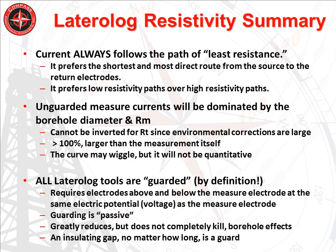To counter the borehole effect on the measure current, tool designers added guard electrodes on each side of the center electrode. Only the current from the center — the measure electrode — is measured. Guard electrodes are operated at the same voltage as the measure electrode so that the measure electrode current cannot flow up and down the borehole. The guard current flows up and down the borehole and into the formation, but the measure current is strongly focused radially into the formation. This active guarding greatly reduces borehole effects. An insulating gap by itself does not prevent the measure current from flowing up and down the borehole and is not a substitute for active guard electrodes.